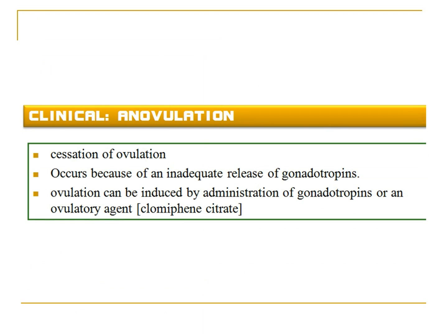Another applied aspect of ovulation is anovulation. In some women, the menstrual cycle may be anovulatory, where no ovulation occurs due to inadequate release of gonadotropin hormones. In women with anovulatory cycles, ovulation can be induced with the help of gonadotropin administration or ovulatory agents like clomiphene citrate.